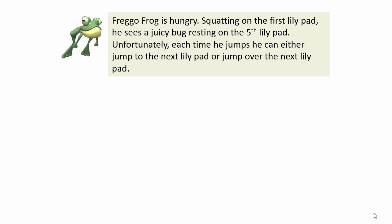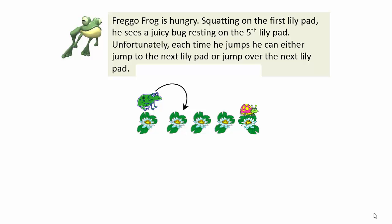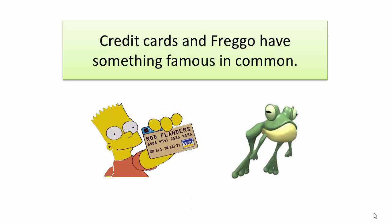Something like this: there's one way, and this is the second way. Also, there is an important connection between a credit card and Freggo's way of jumping, and we're going to discover what that is.